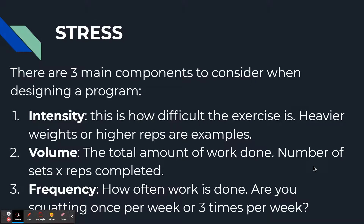If we dive into stress — this is the core of programming — there are three main things to consider. Intensity is how difficult the exercise is; higher weight means more intense. Volume is the total amount of work done, which we'll consider as sets times reps completed. If you're doing three sets of five, that's a volume of 15 reps; four sets of five is 20 reps. If you increase volume week to week, your stress is increasing and you should see continued adaptations, but you can't do this forever. Frequency is how often the work is done — are you squatting once per week or three times per week?